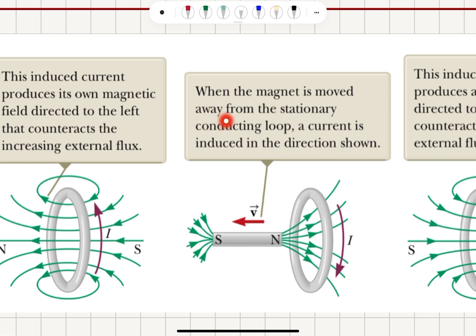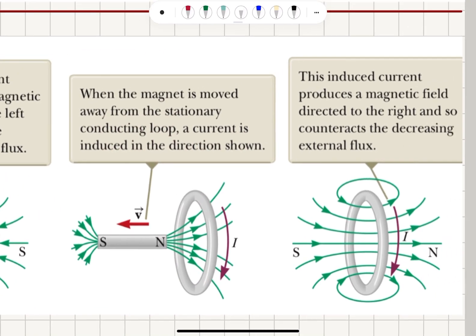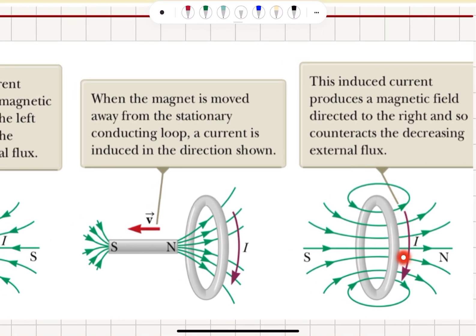When the magnet is moved away from the stationary conducting loop, a current is induced in the direction shown and the magnetic field lines created by this current point to the right. This induced current produces a magnetic field directed to the right and counteracts the decreasing external flux to the right due to the bar magnet moving away from the loop.